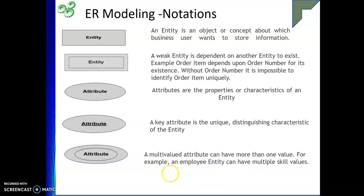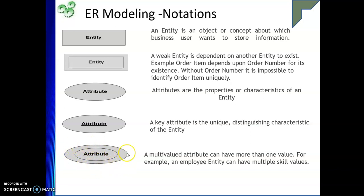Next is the multi-valued attribute. The multi-valued attribute is represented with a double oval shape — similar to how a weak entity uses a double rectangle. So for a multi-valued attribute we have a double oval shape.